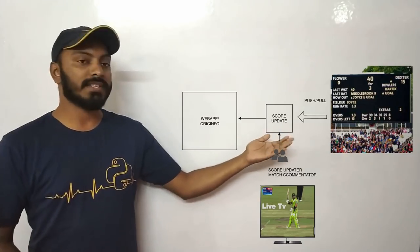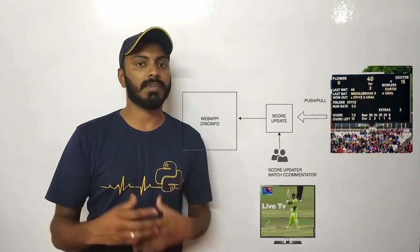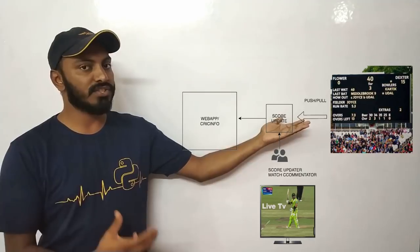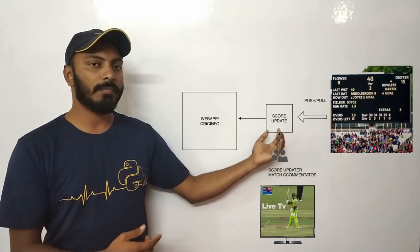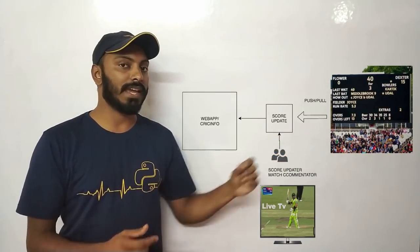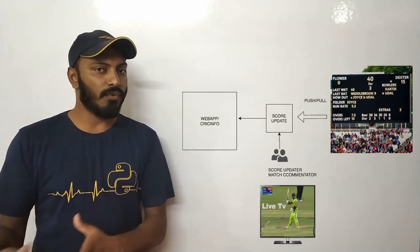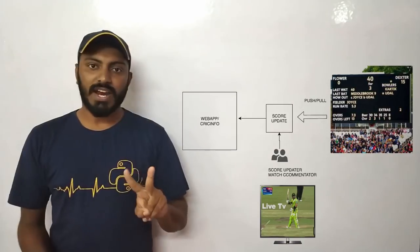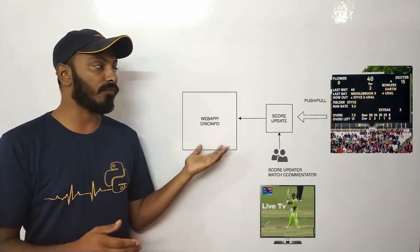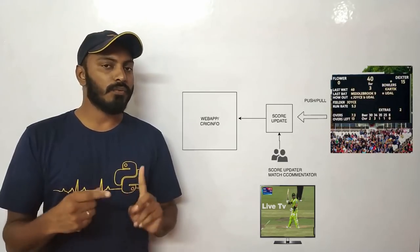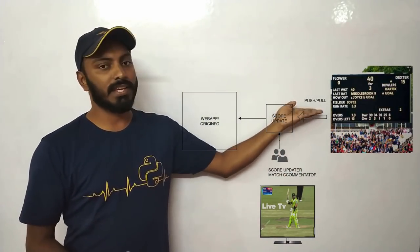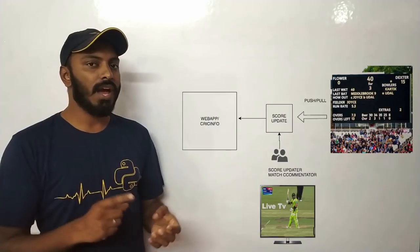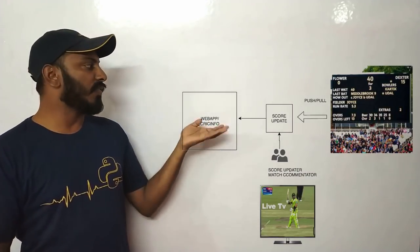In the stadium where the match is going on, there is a score update service or portal. There are two people — a commentator and a score updater — who sit in the Cricinfo office watching live TV. There are two strategies to sync real-time scores. The first is an automated service wherein the stadium sends updates to the score update service, which in turn updates scores, wickets, and runs to the Cricinfo system.